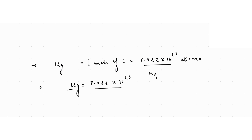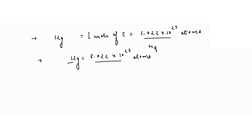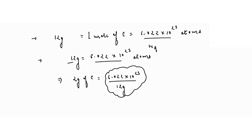Questions can arise from this: how many atoms are contained in one gram of carbon? Or, how many atoms are there in 2 grams of carbon? If 12 grams contains 6.02×10²³ atoms, then for 2 grams of carbon, we first find the number of atoms in 1 gram of carbon.